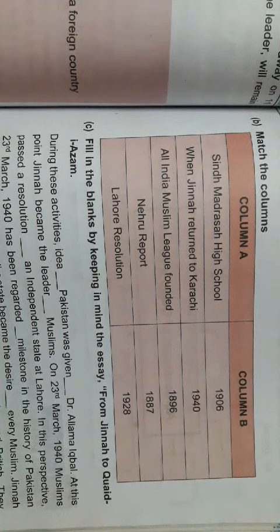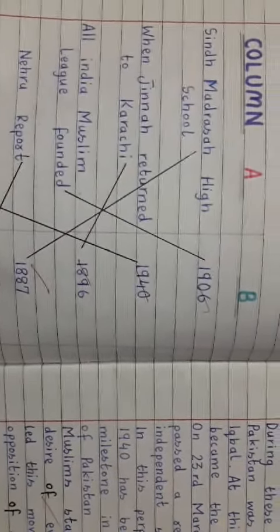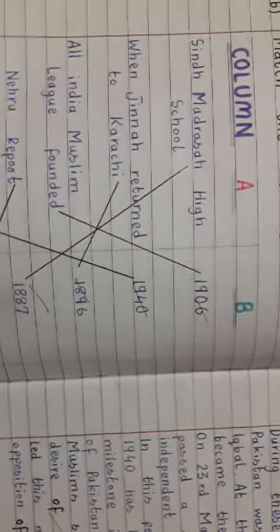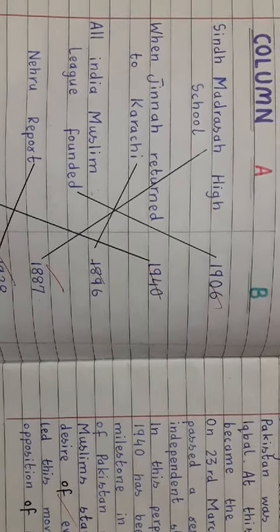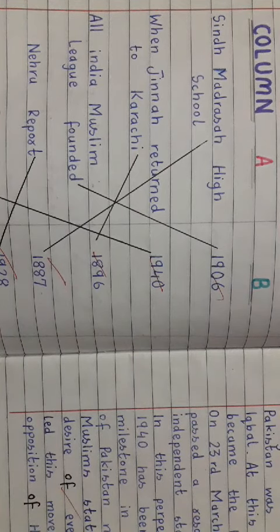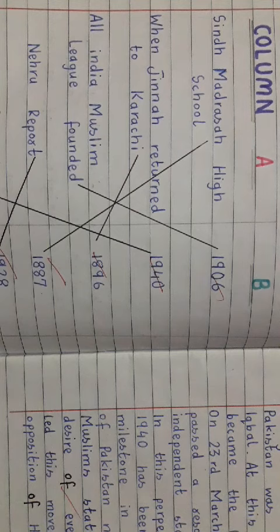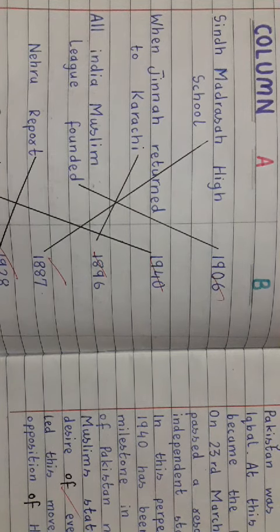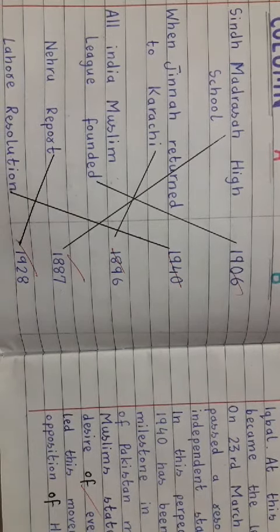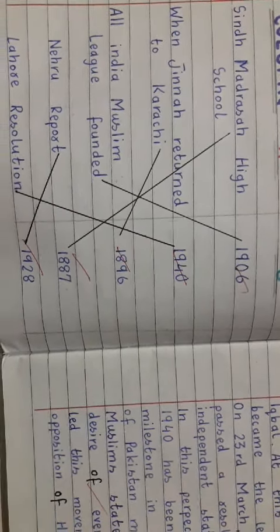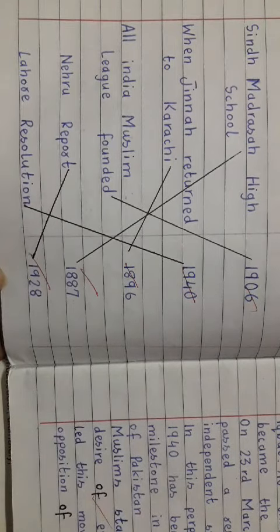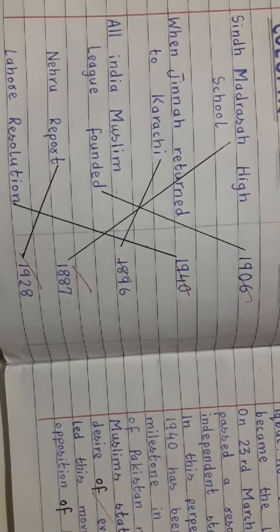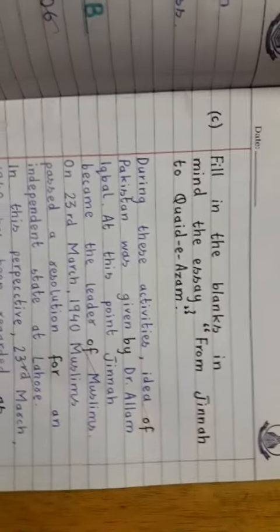You have to match these columns like this: number one is Madrasa high school, it goes with the date 1887. When Jinnah returned to Karachi it is 1896. India Muslim League was founded in 1906. Nehru report was presented in 1928, and the Lahore resolution was passed in 1940. In this way you can see that we have matched these two columns.